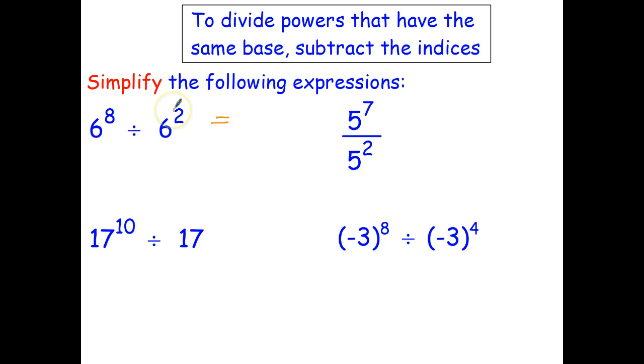Six to the eighth divide six to the second. Well that becomes six to the eight subtract two. You can think of it as I'm dividing out two sixes from top and bottom. That leaves six sixes in the numerator, if I'm thinking of them as fractions.